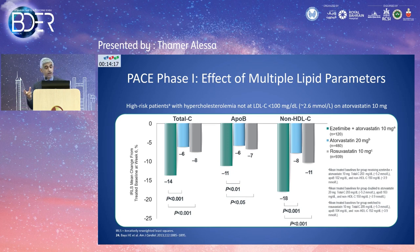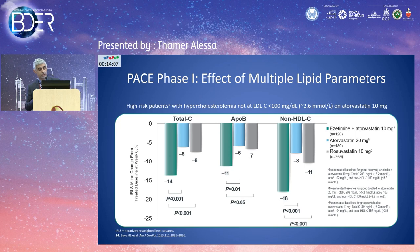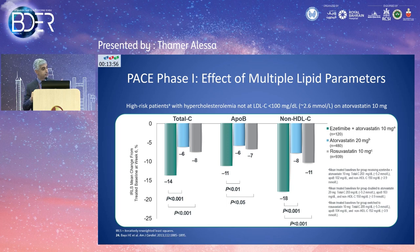Looking beyond LDL at broader markers of atherogenicity, adding ezetimibe to atorvastatin reduced ApoB — the total atherogenic lipoprotein particle count — by about 11%, statistically better than doubling atorvastatin or switching to rosuvastatin. Non-HDL cholesterol reduction was also achieved at about 18%, greater than either dose doubling or switching.